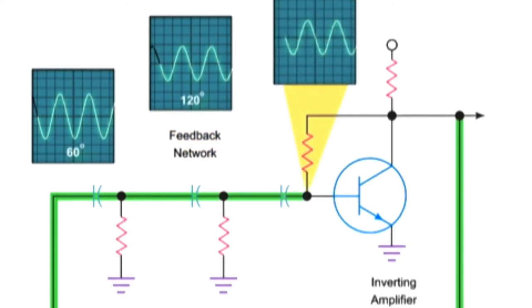So, by the time the signal leaves the network, it will be 180 degrees out of phase and reduced in size.